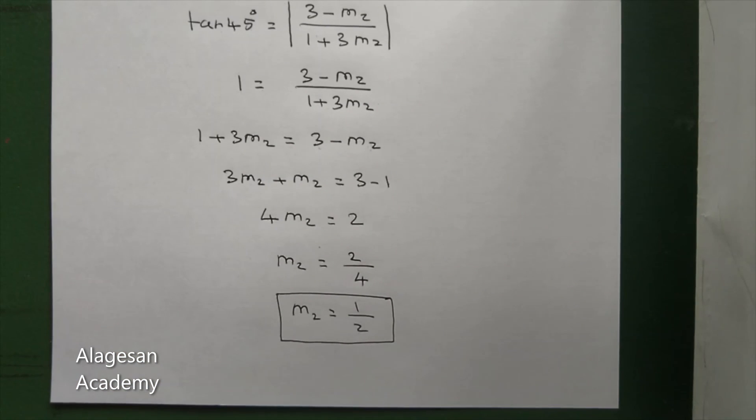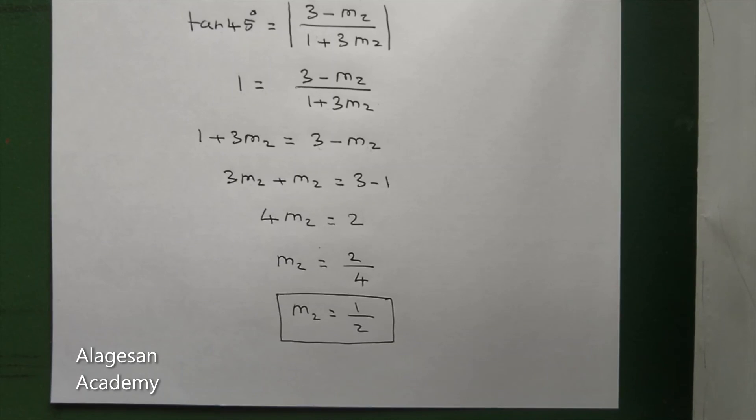So M1 equal to 3 and M2 equal to 1 by 2. Can you understand this problem? Okay.